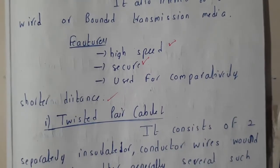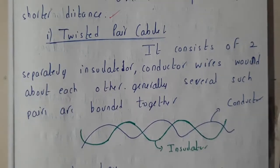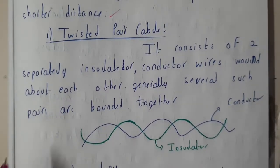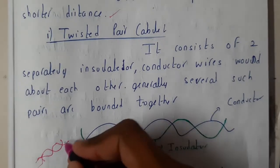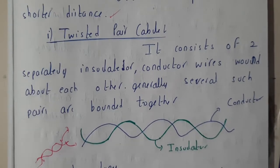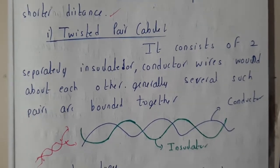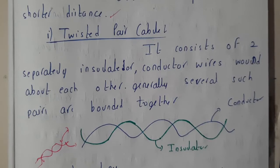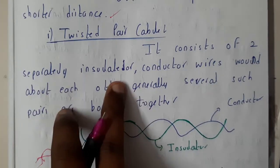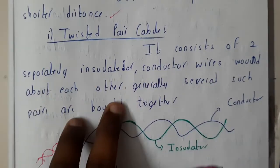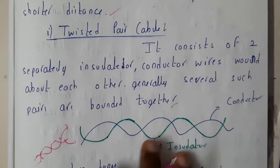The first type of guided media is twisted pair. Twisted pair is of two types: unshielded and shielded. The wires are twisted among themselves — one wire acts as a conductor and another as an insulator, and these two are twisted tightly together. Multiple such pairs are bundled together in a single cable, which is nothing but a twisted pair.